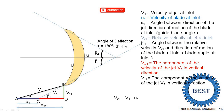We assume the surface of the curved plate is smooth, which means the relative velocity vr1 equals the relative velocity vr2. Similarly, for the outlet, the relative velocity vr2 lies along the blade angle line beta2. The absolute velocity of the jet at outlet is v2, coming at angle alpha2 — at the inlet we used angle alpha1 for v1, and here we use angle alpha2 for v2.